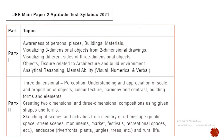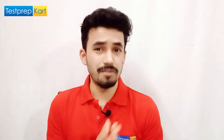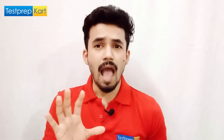Now the aptitude test syllabus for 2021 is divided into two parts. Part 1 comprises awareness of persons, places, buildings and materials, visualizing 3D from 2D, visualizing different sides of 3D objects, textures related to architecture and building environment, analytical reasoning, and mental ability including visual, numerical, and verbal. Part 2 is about 3D perception — understanding and appreciation of scale and proportion of objects, color, texture, harmony, contrast, building forms and elements, shapes, and forms from memory including street scenes, monuments, markets, festivals, and rural life.